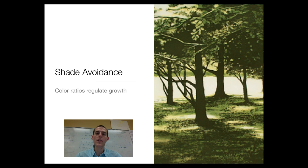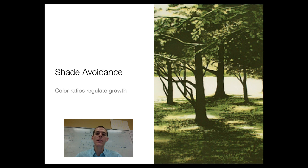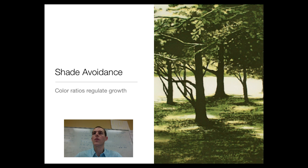Another response is shade avoidance. If you are a tree and sunlight is available, you want to put energy into growth. However, if you are being shaded, you don't want to waste energy on growing. Again, we're dealing with this red/far-red shift — the ratio of red to far-red phytochromes in a plant lets it know whether it needs to put energy into growing bigger and bushier, or whether it needs to conserve resources in response to shade.